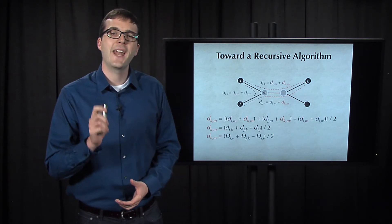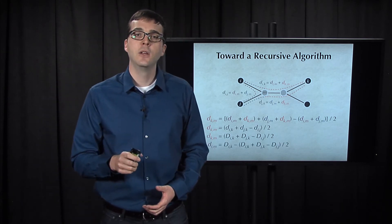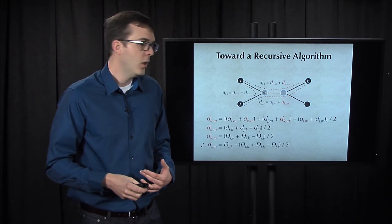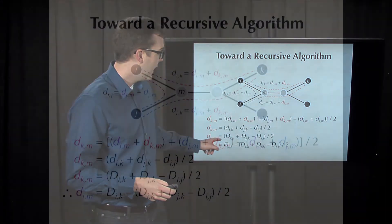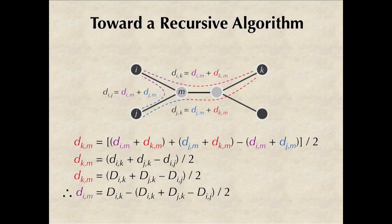We therefore now have a formula for the distance from i to its parent node m, which is just the distance from i to k minus the distance from k to m, which we just derived a formula for.